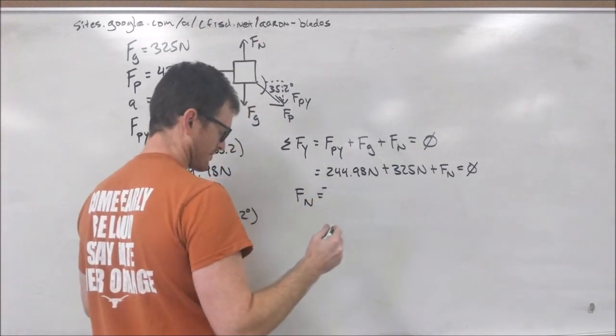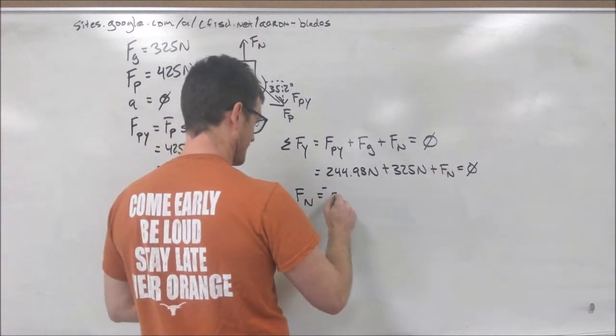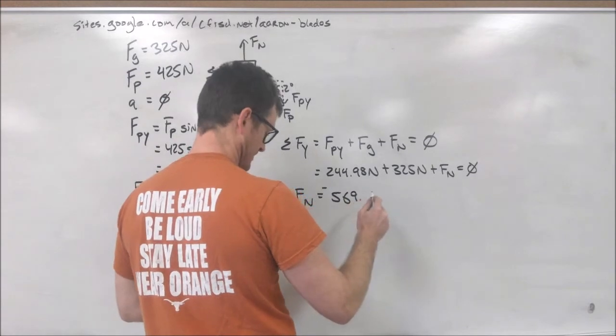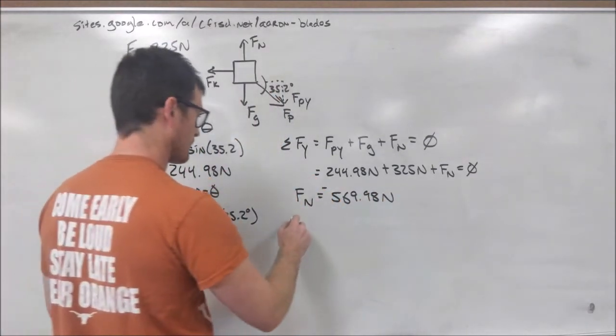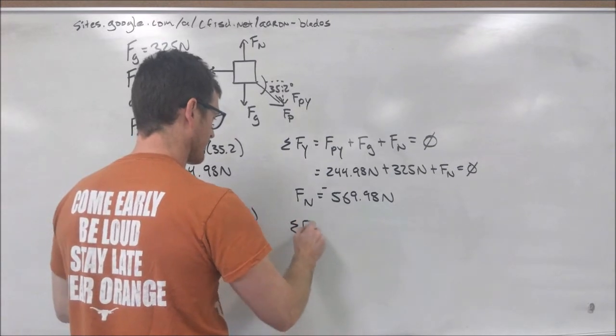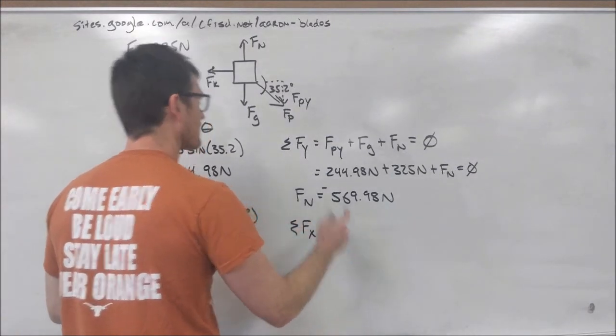Because since they are zero, they're going to be balanced out by our normal force. And since they're in the opposite direction, we have a normal force of 569.98 newtons.